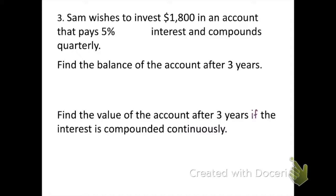Example three, Sam wishes to invest $1,800 in an account that pays 5% interest and compounds quarterly. Find the balance of the account after three years. Then we're also going to find the value of the account after three years if the interest is compounded continuously. So since we're talking about an investment, we're going to use the compound equations. First of all, it says right here compounds quarterly, so we're going to use that periodic compounding equation.